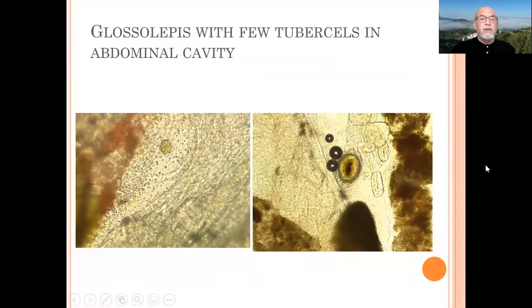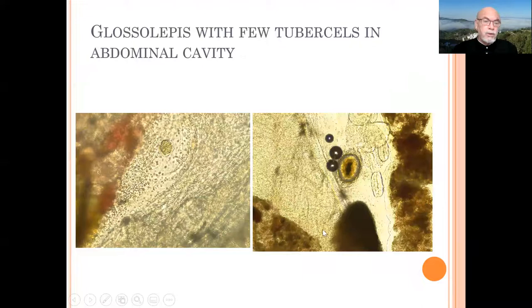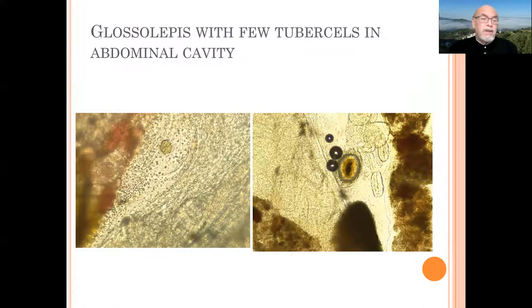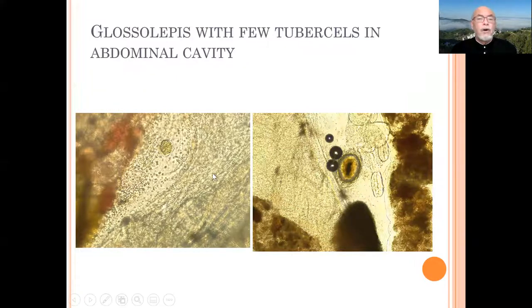If we look further in the organs, we found a few tubercles next to the intestine and the organs. This is a possible case of fish tuberculosis. Only a laboratory can confirm this when you do a proper molecular testing.